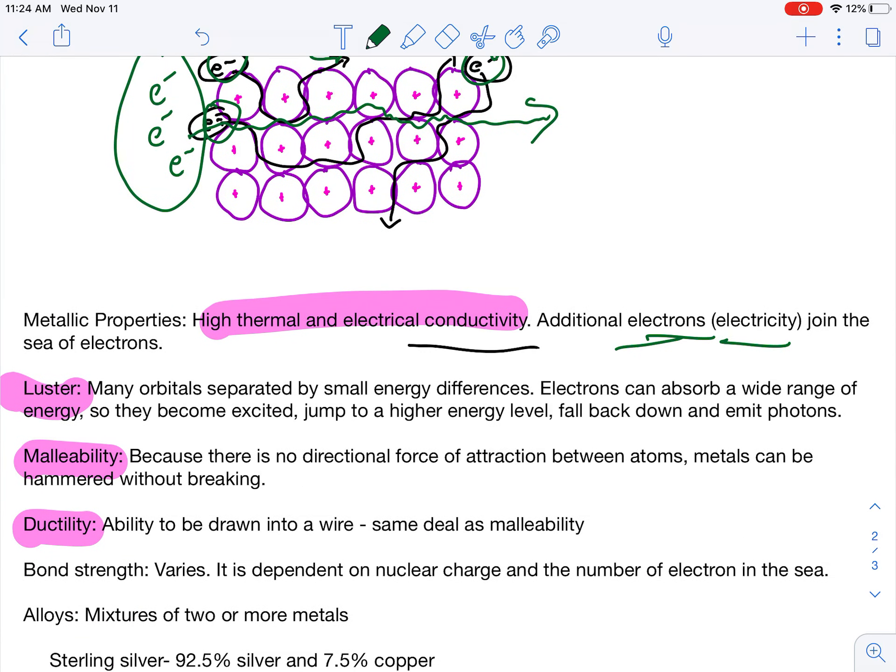Malleability. We already kind of talked about this. There's no directional force of attraction between the atoms. Therefore, you can hit it with a hammer, and it doesn't break. Ductility is a fancy word to describe being drawn into a wire. It's the same idea as malleability.